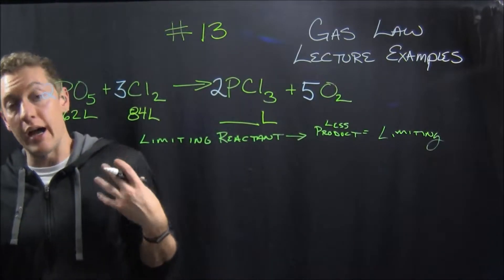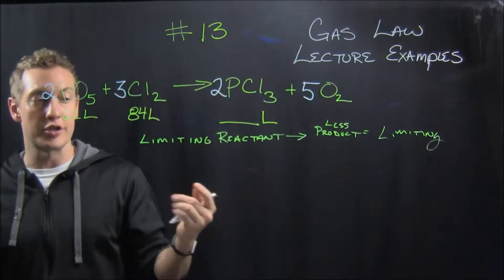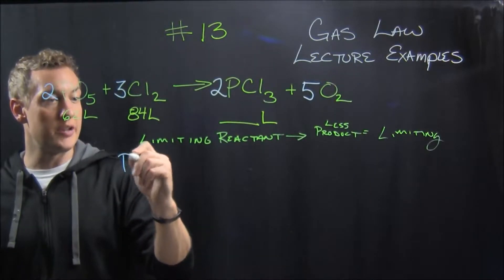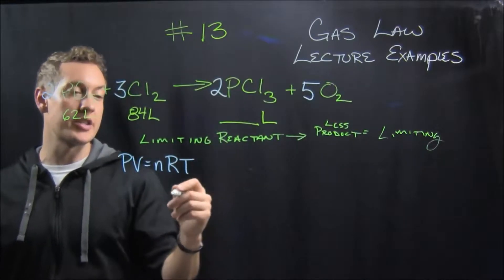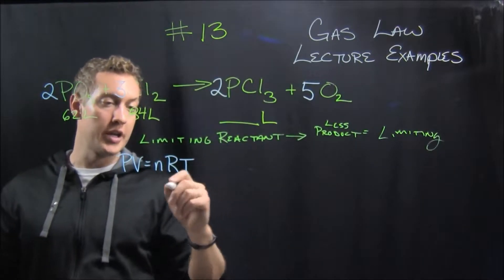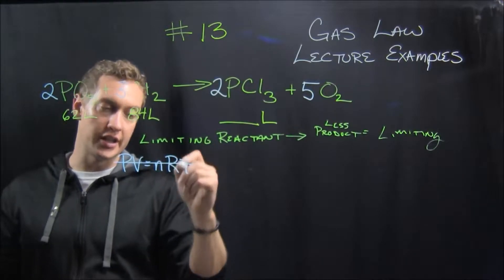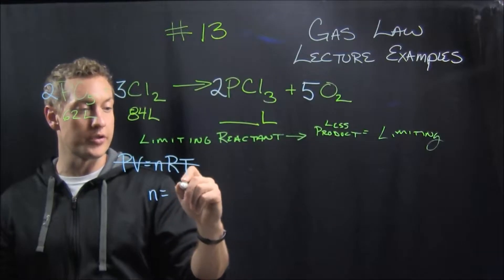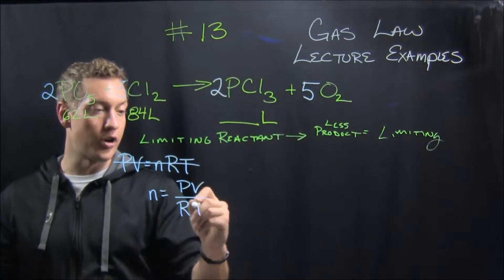Now the only way I know to get moles from liters of a gas, pressure, and temperature is to use the ideal gas law. So we're going to be using PV equals nRT, and we're going to rearrange that because we're interested in moles. And so we're going to rewrite that. We're going to divide the RT over to that side. So it's going to be moles equals pressure times volume divided by R times T.